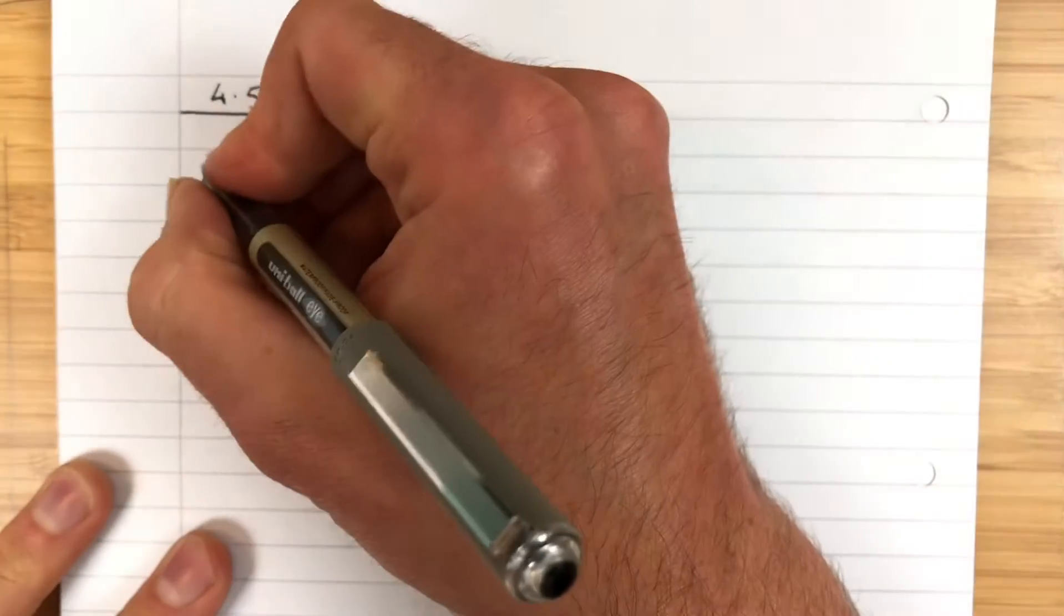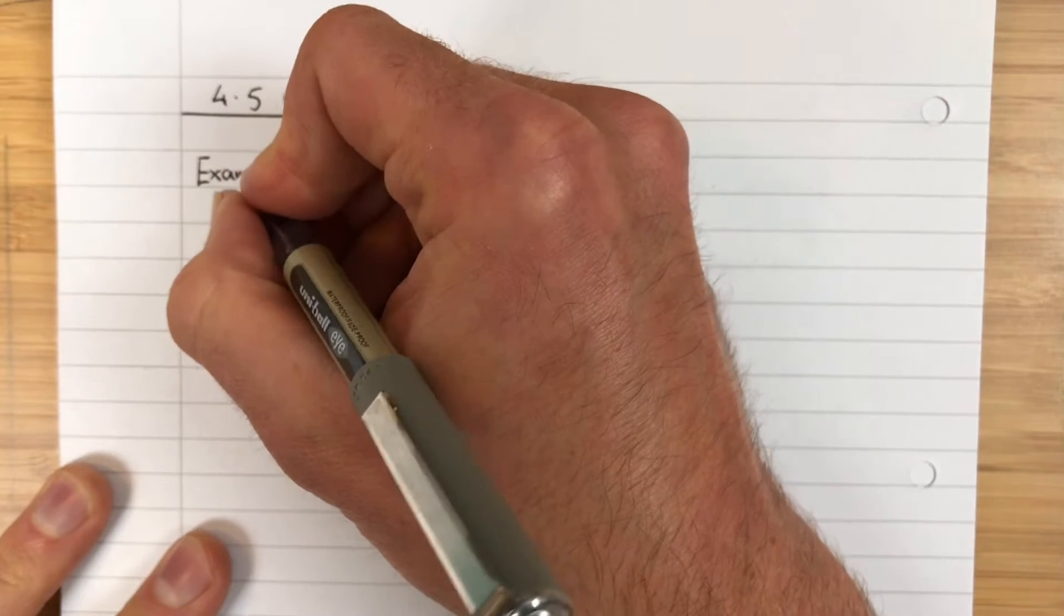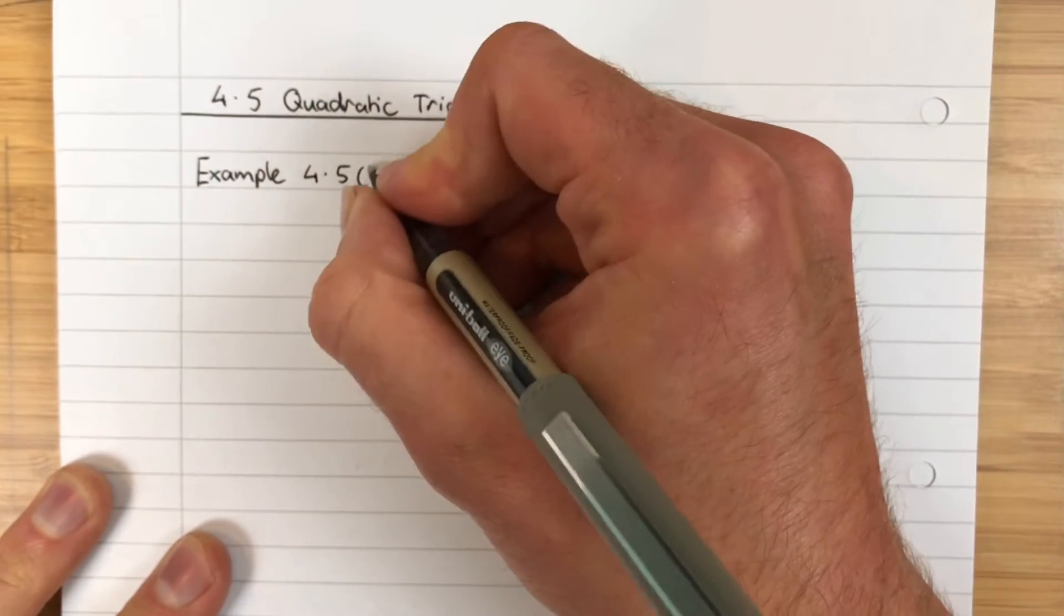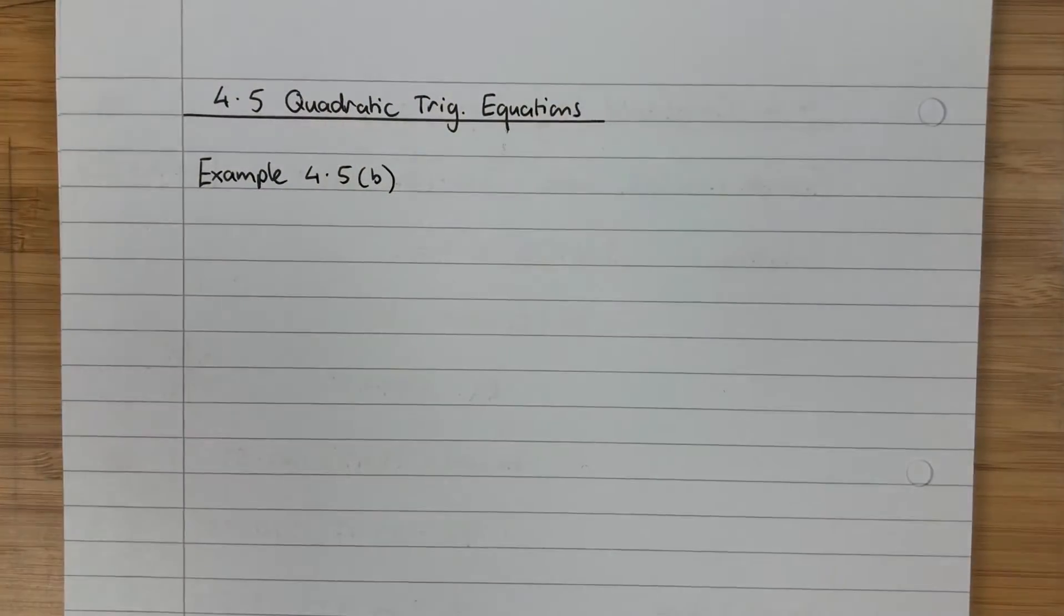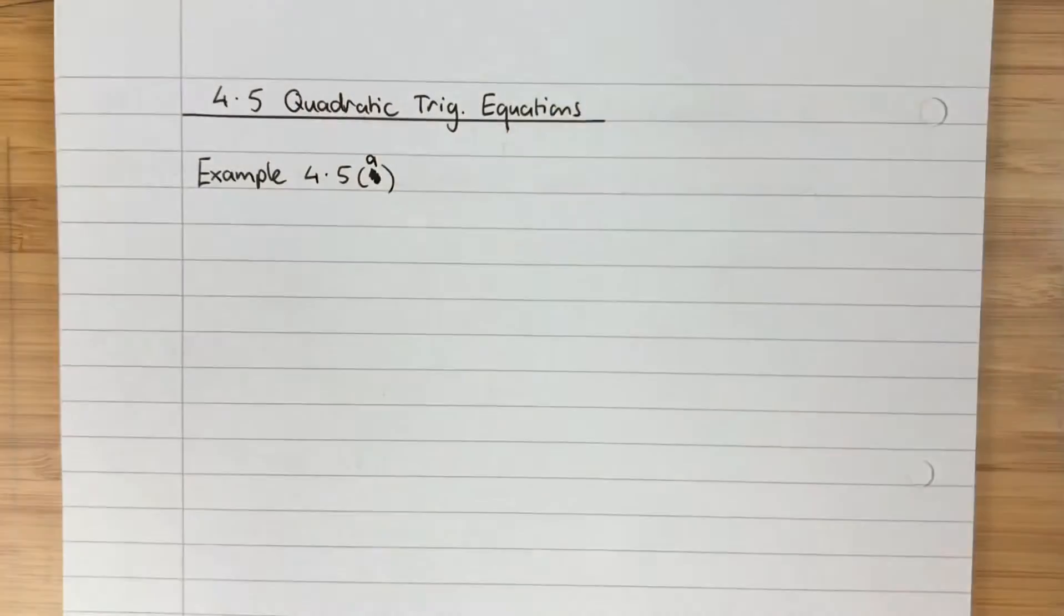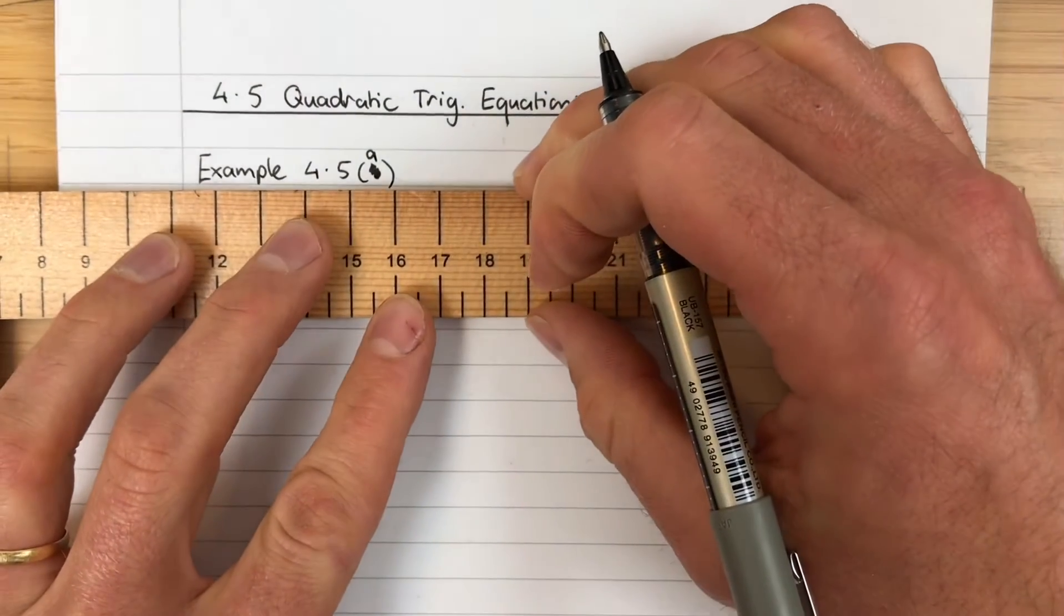This is 4.5 quadratic trig equations. You can abbreviate trigonometric down to trig because it's ridiculous to write quadratic trigonometric equations. I'm just going to go straight into an example, Example 4.5a.